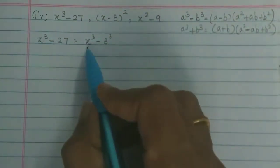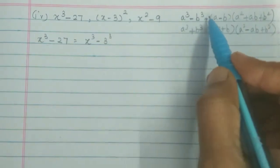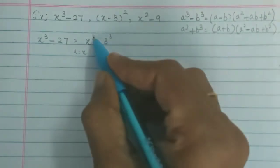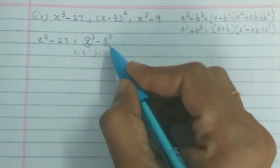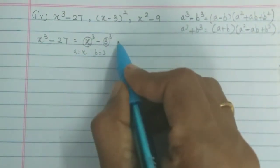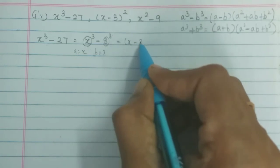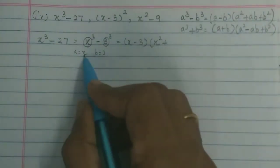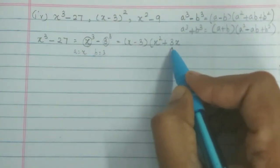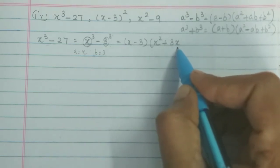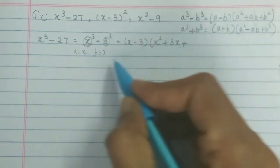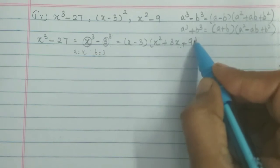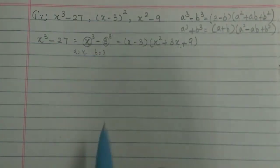So x³ - 3³ = (x-3)(x² + 3x + 9). Here a = x and b = 3, so a-b = x-3, a² = x², ab = 3x, and b² = 9.